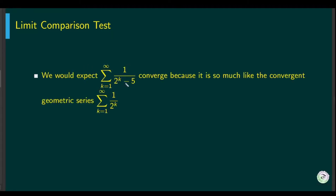If you look at this series, when k gets larger, this negative 5 is negligible compared to 2^k. So as k gets large, this starts to look like the geometric series 1 over 2^k, which has a common ratio of half, therefore it converges. So we expect this to also converge.